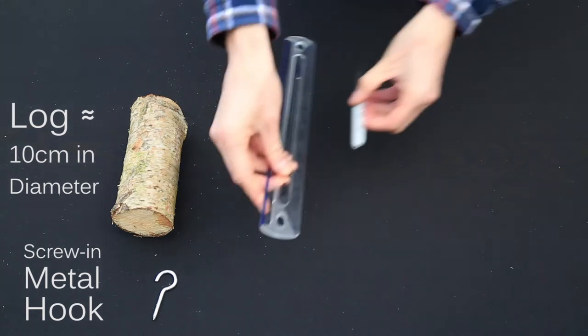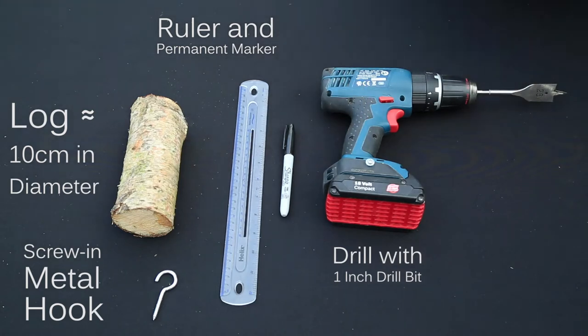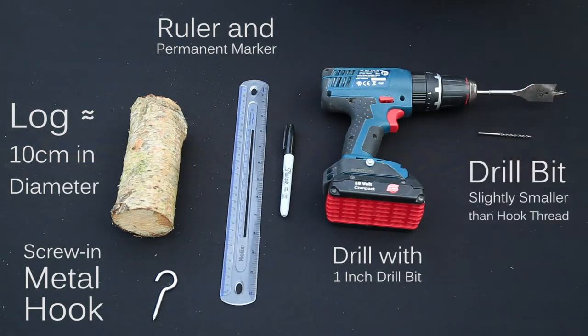a ruler and permanent marker, a drill with a 1 inch drill bit and a drill bit that's just a bit smaller than the thread on the screw-in hook.